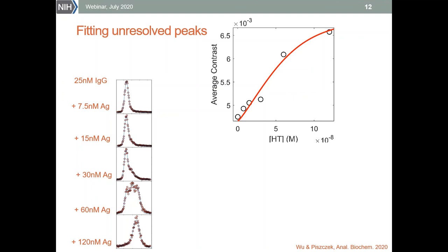For the two-binding-sites system shown here, we are obviously losing the information about the population of the individual binding sites, but we can still easily fit the data and obtain the same binding constant that you would get from SPR, MST, or other methods — but much faster, without labeling or immobilization, and with less material.